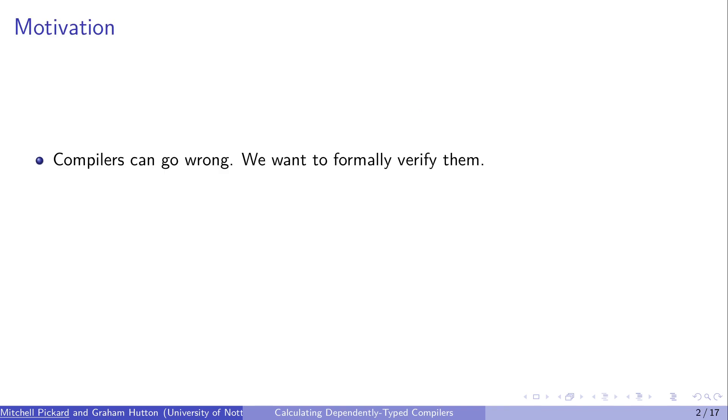Why would you want to calculate a dependently typed compiler? Well, compilers can go wrong, we all know that. It's not necessarily a very common occurrence, but we all enjoy formally verifying stuff, so it'd be nice to have completely formally verified compilers that we know cannot go wrong.